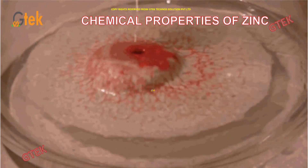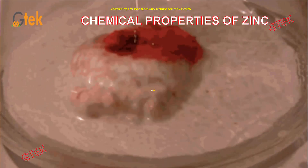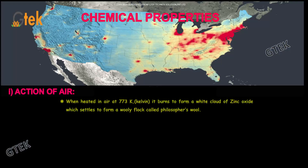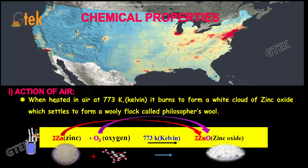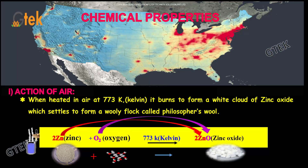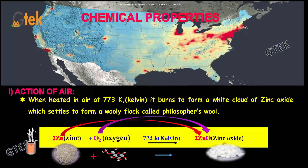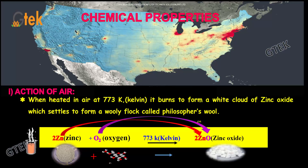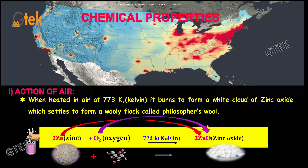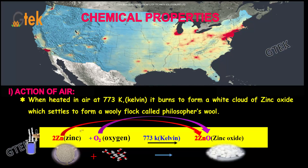Let's move on to the chemical properties of Zinc. Action of air: when heated in air at 773 K, it burns to form a white cloud of zinc oxide, which settles to form a woolly flock called Philosopher's Wool. The zinc oxide formed is called Philosopher's Wool. Zinc with oxygen at 773 K gives zinc oxide.